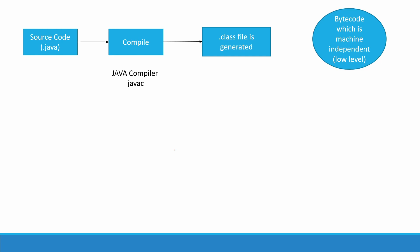Bytecode is basically machine independent code. What does machine independent mean? After the compilation step we have a .class file, and we can run this file from any machine. For example, if you have a .class file generated in Windows, you can run the same .class file on an Ubuntu system or on a Mac system as well. So this is what machine independent means. We need a source code which is a .java file, we go through the compile step, and if compilation is successful then a .class file is generated.